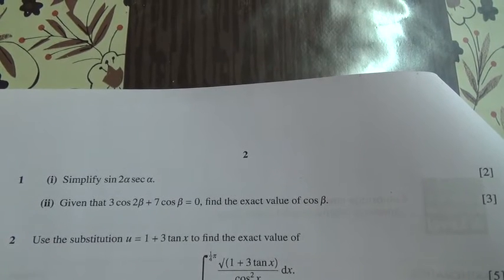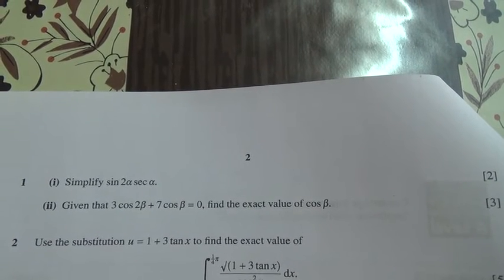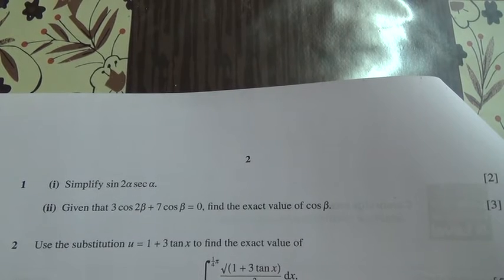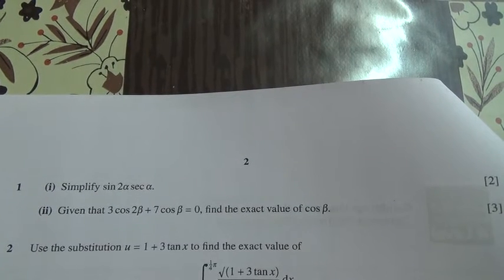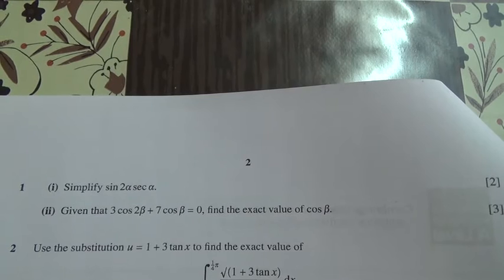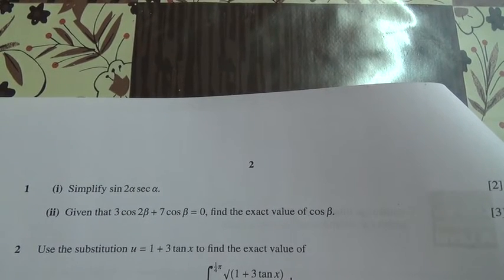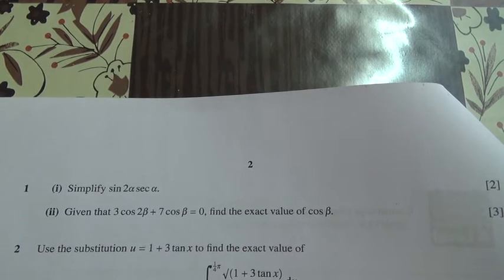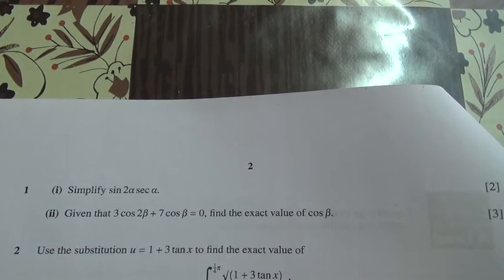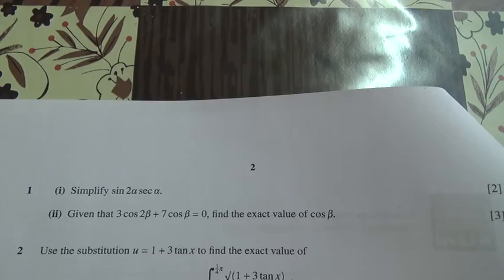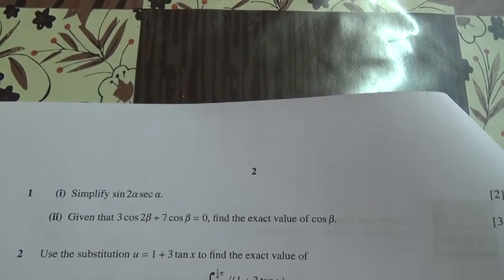Question number 1 taken from June 2014 Advanced Level Maths HSE P3. For the first part, simplify sine 2 alpha sec alpha. And the second part, given that 3 cos 2 beta plus 7 cos beta is equal to 0, we need to find the exact value of cos beta. Okay, so let's do it.